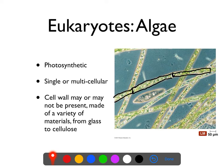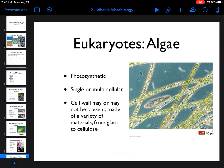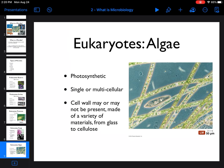Some algae have cell walls made out of glass. Diatoms, which are absolutely stunningly beautiful, grow these intricate, tiny, beautiful, multifaceted cell walls made out of glass. So algae might have a cell wall or they might not, and if they do, it could be made out of a bunch of different things. And that is what microbes are.